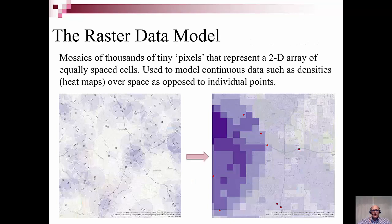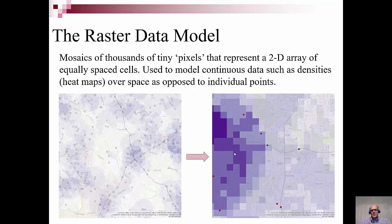We also have the raster data model, which is mosaics of thousands of tiny pixels that represent 2D arrays of equally spaced cells. It's typically used to model continuous data, such as density over space, as opposed to individual units. So you might see the location of every single patient — which we may or may not be allowed to use — but we can make heat maps to see where the concentration or density is higher or lower.